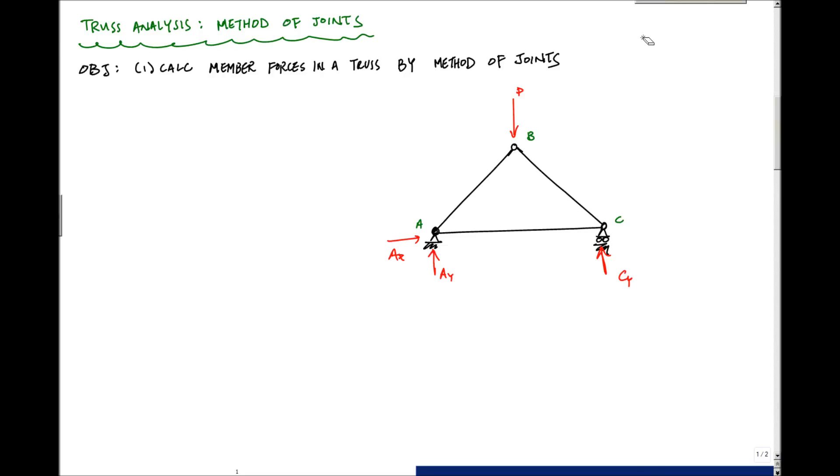To start off, the method of joints is based on the idea that because my structural system, my truss is in equilibrium, I can isolate any other part and it will also be in equilibrium. So if I cut out a joint here, let's say I cut out a joint right here, so let me draw a little bit of that cut out joint right there.